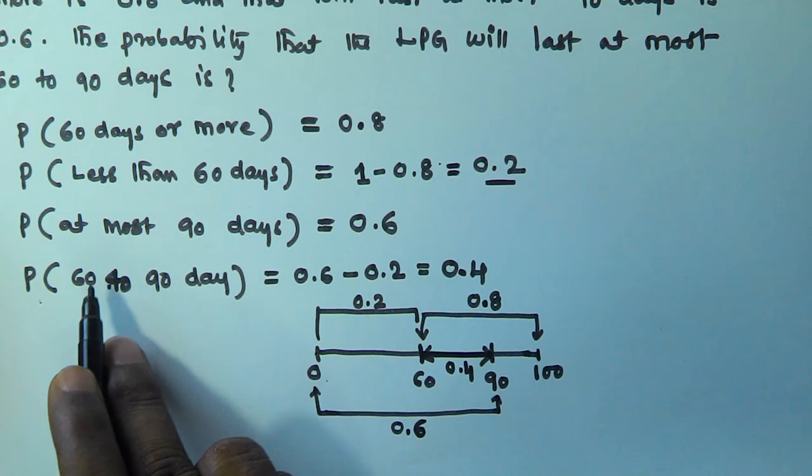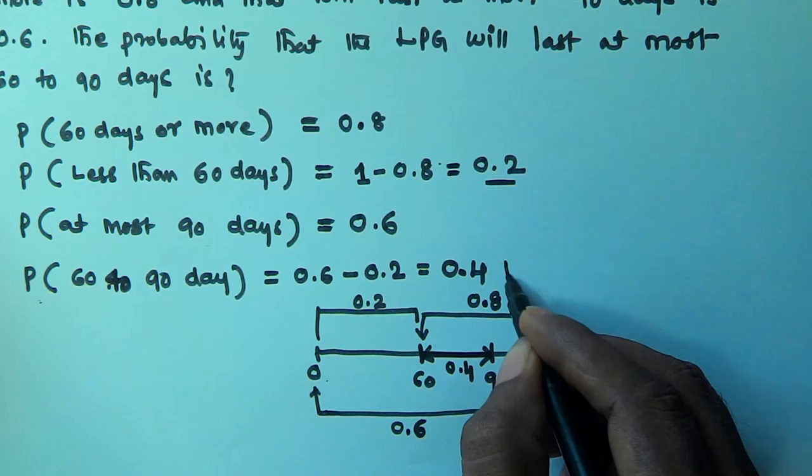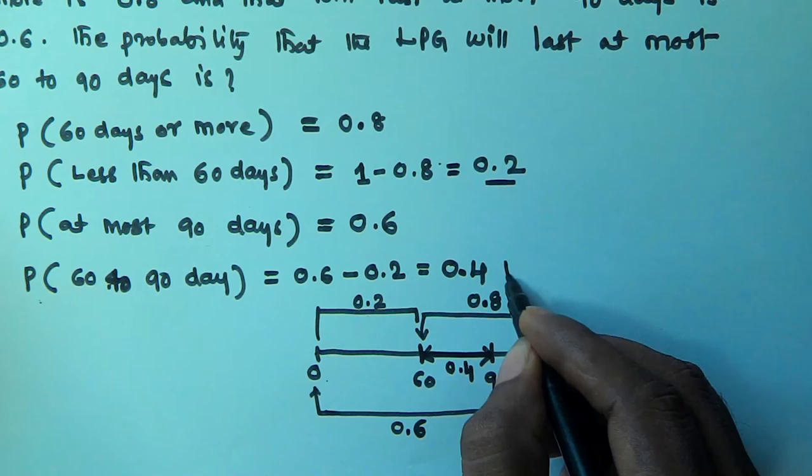So the probability that the LPG will last at most 60 to 90 days is 0.6 minus 0.2, which equals 0.4. I hope you got this. Thank you very much for watching this video, and please subscribe to my channel.